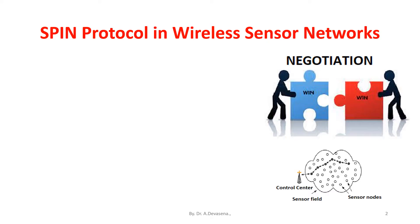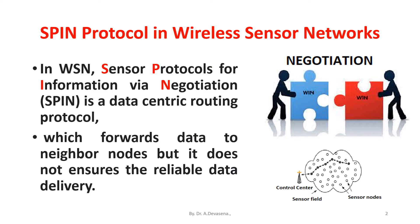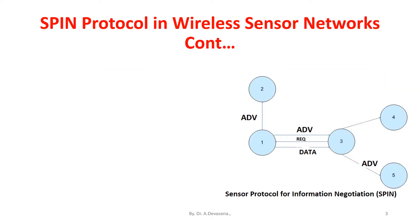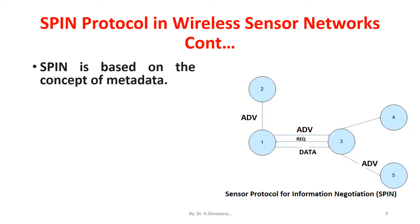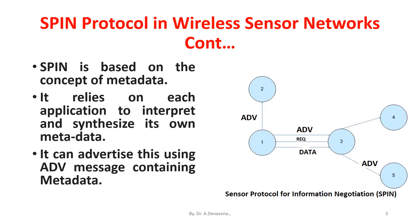In wireless sensor networks, sensor protocols for information via navigation — that is SPIN — is a data-centric routing protocol which forwards data to neighbor nodes, but it does not ensure reliable data delivery. SPIN is based on the concept of metadata; it relies on each application to interpret and synthesize its own metadata, and it can advertise this using an ADV message containing metadata.